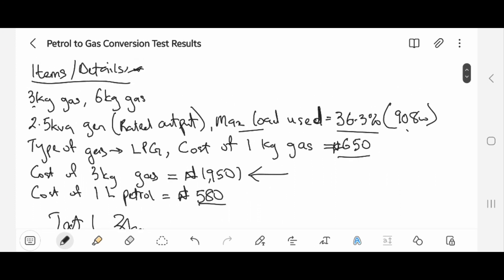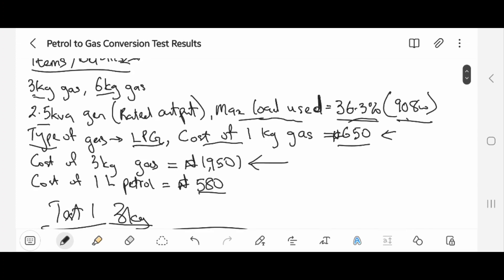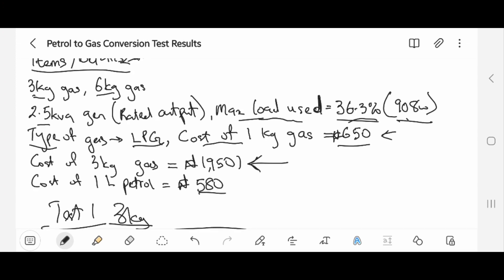These are the items I used: a 3kg gas, a 6kg gas, and a 2.5kVA generator. It's actually 2.8kVA, but the rated constant output it gives is 2.5. The maximum load I used at any point in time in the test is 36.3%, which is 908 watts. The type of gas used is LPG. The cost of 1kg gas as at the time I performed this test was 650 naira. The cost of 3kg gas is 1,950 naira. The cost of 1 liter of petrol is 580 naira.